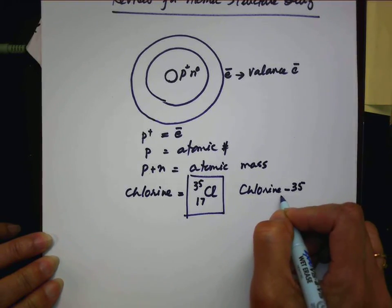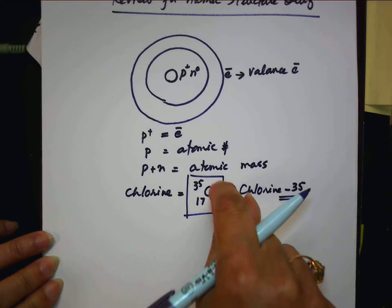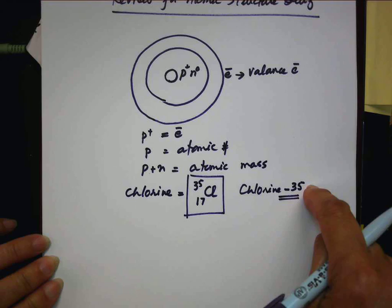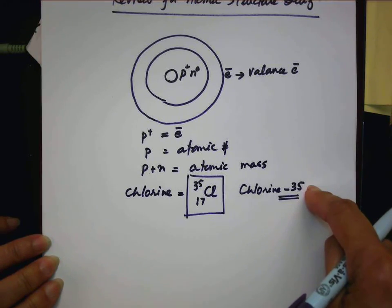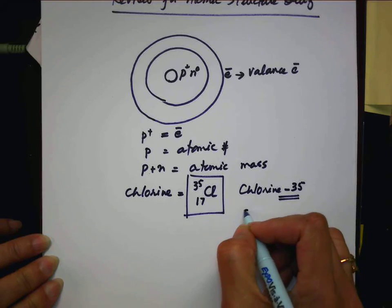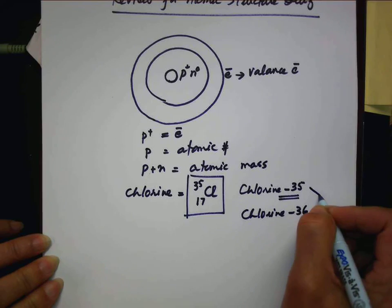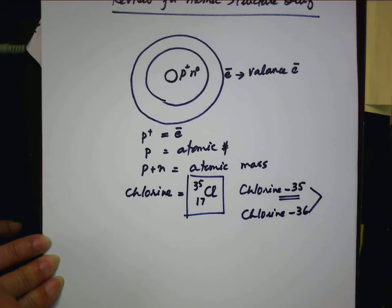What does this dash 35 mean? This chlorine atom has a mass of 35. Can another chlorine atom, can it be 36? So what do you call these two chlorine? Isotopes. Got it?